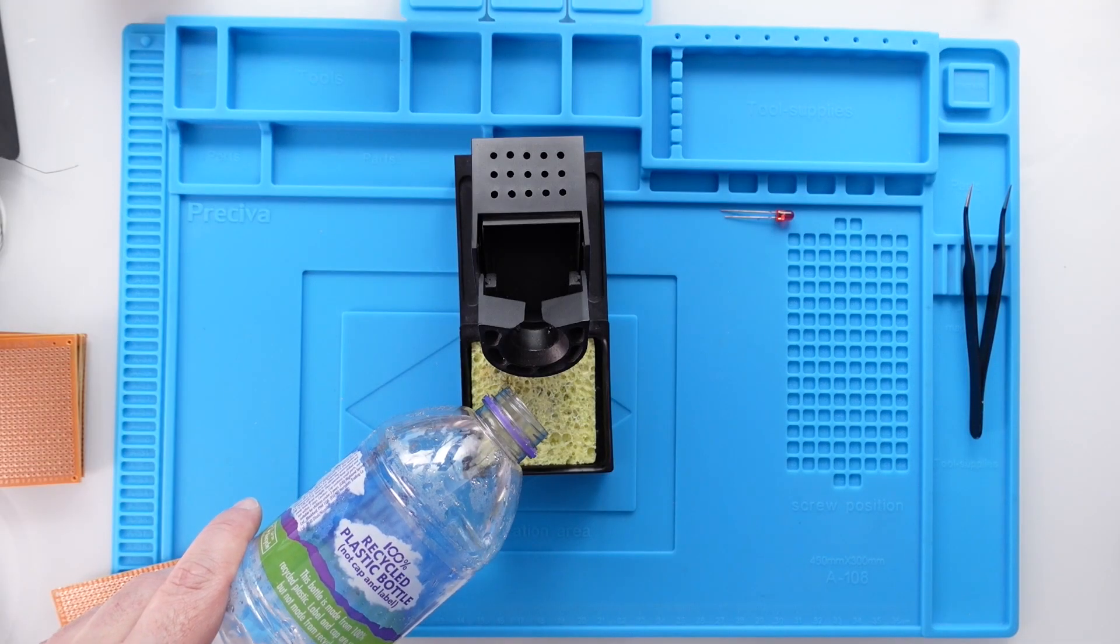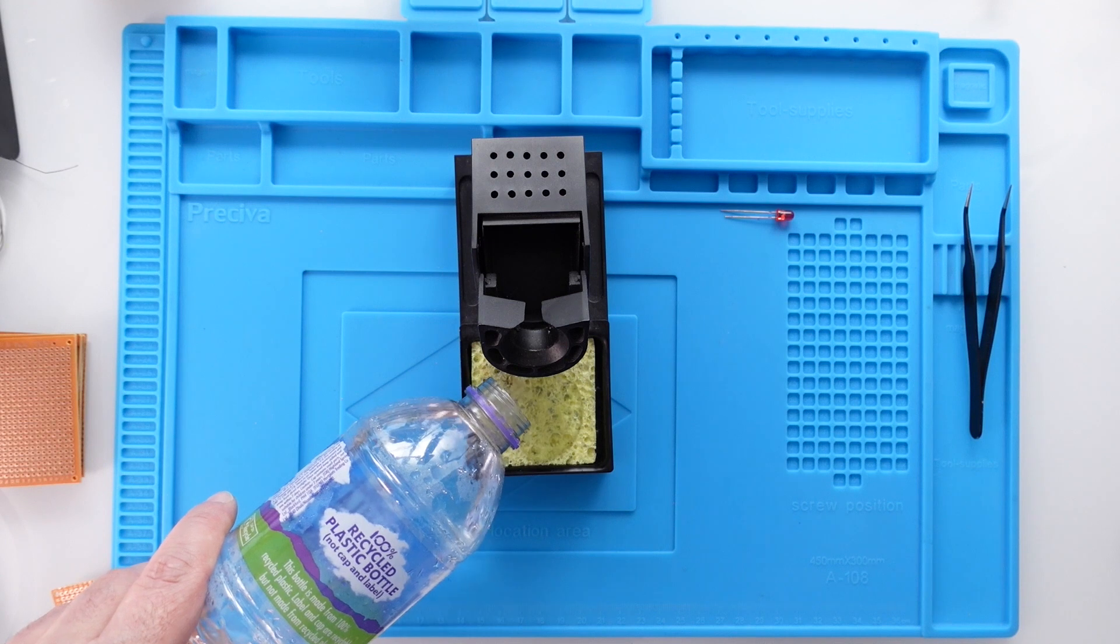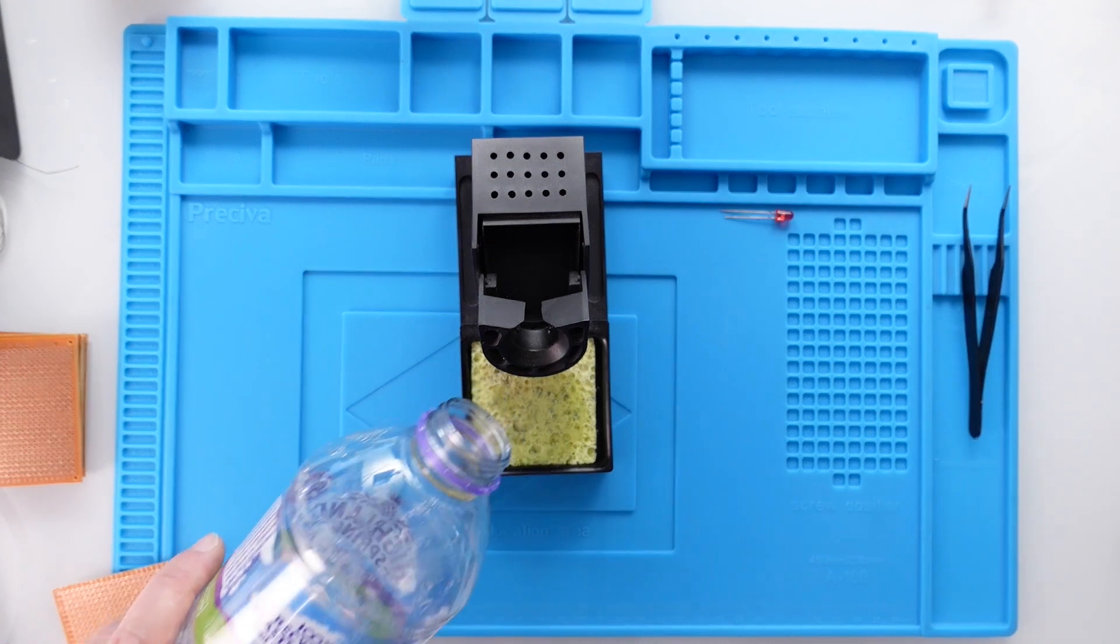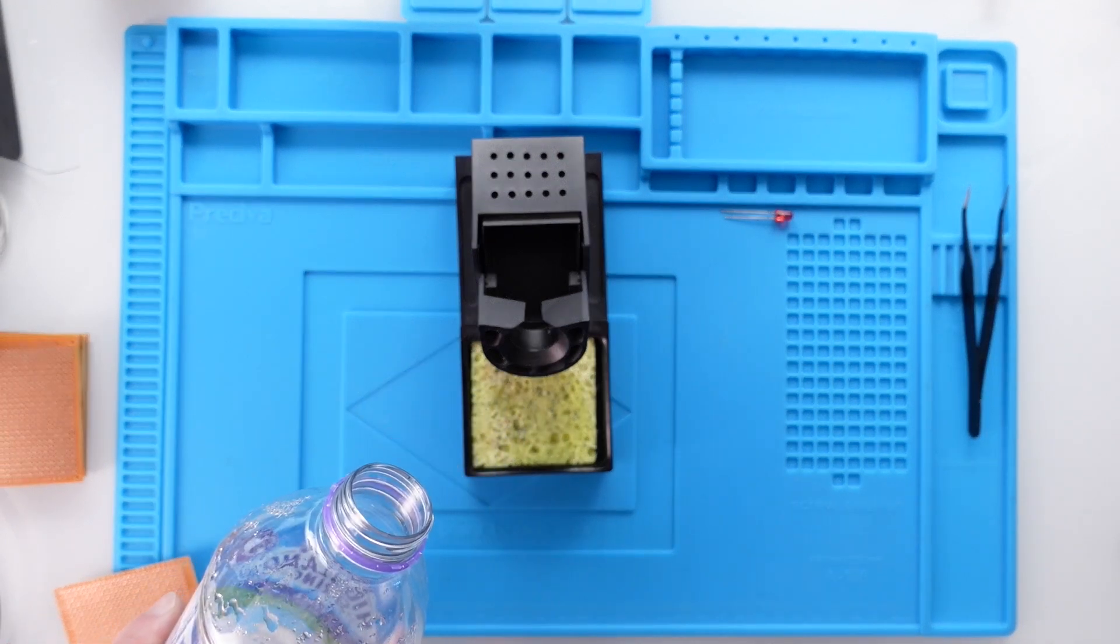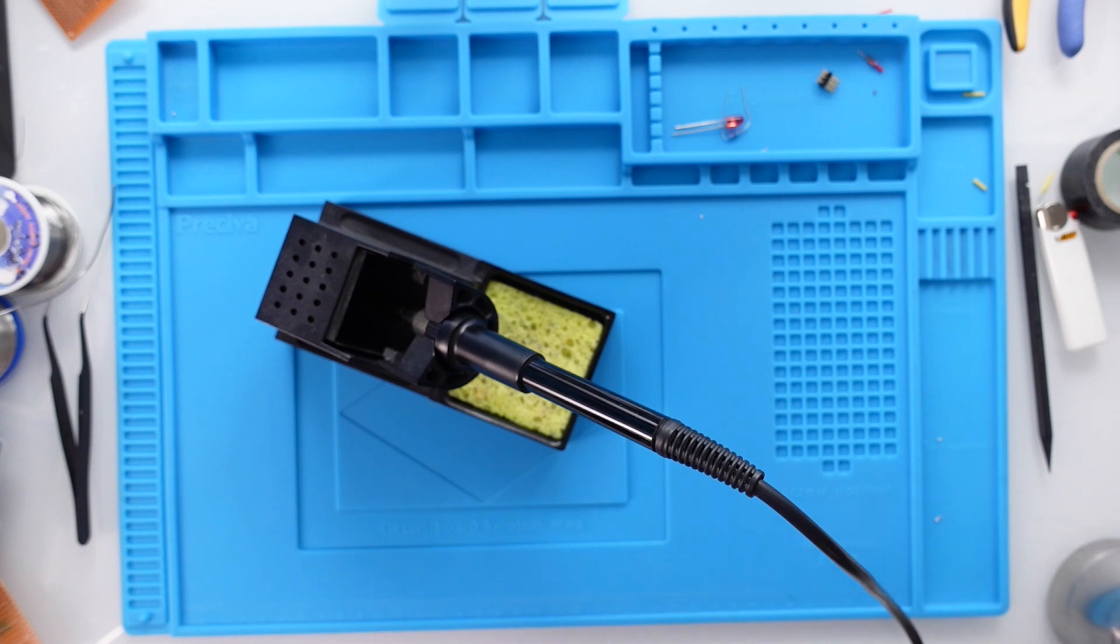So now let's learn some soldering iron tip maintenance. Most holder stands have a little sponge that you can soak in water, but be careful not to put too much, just enough to get it wet. That will help to clean the tip.